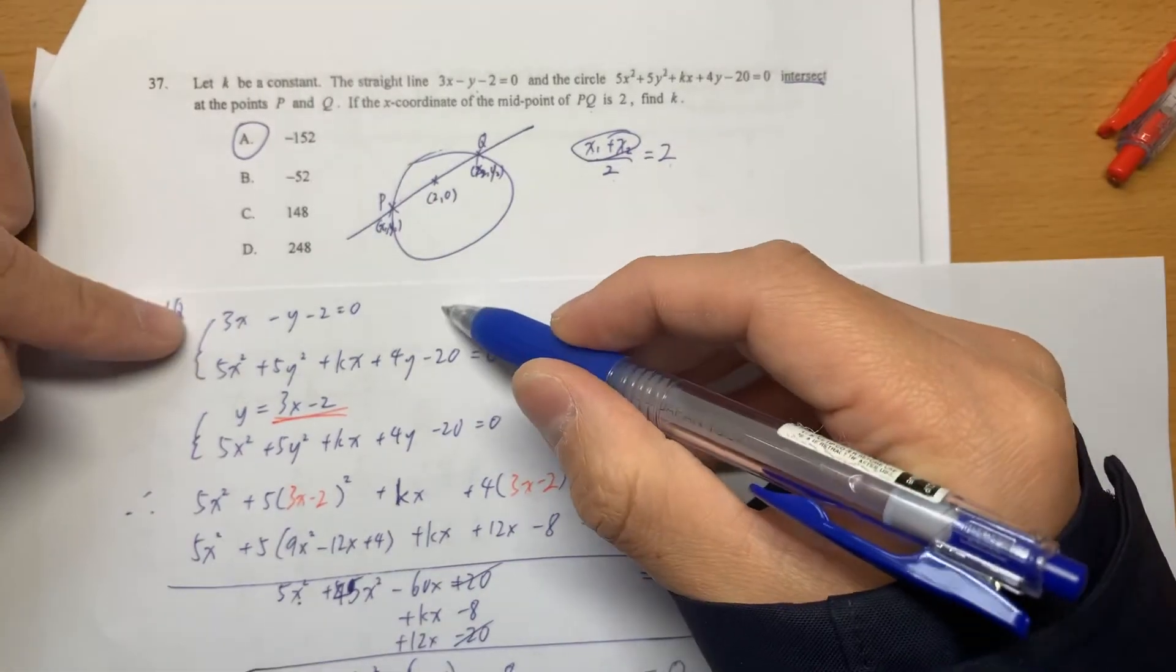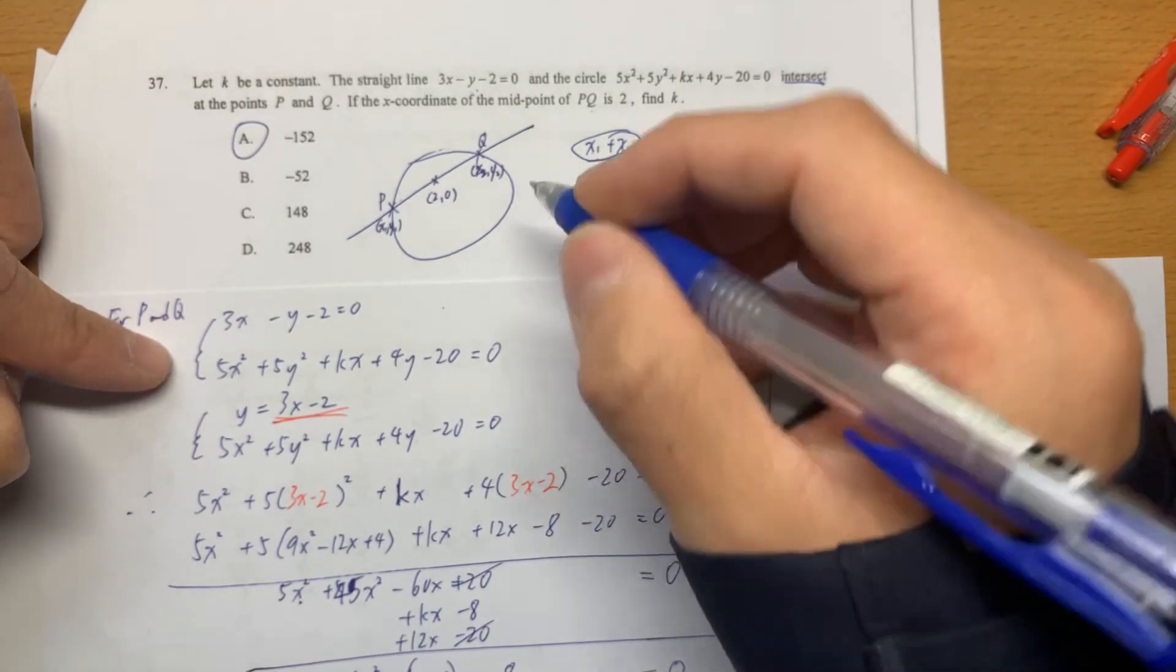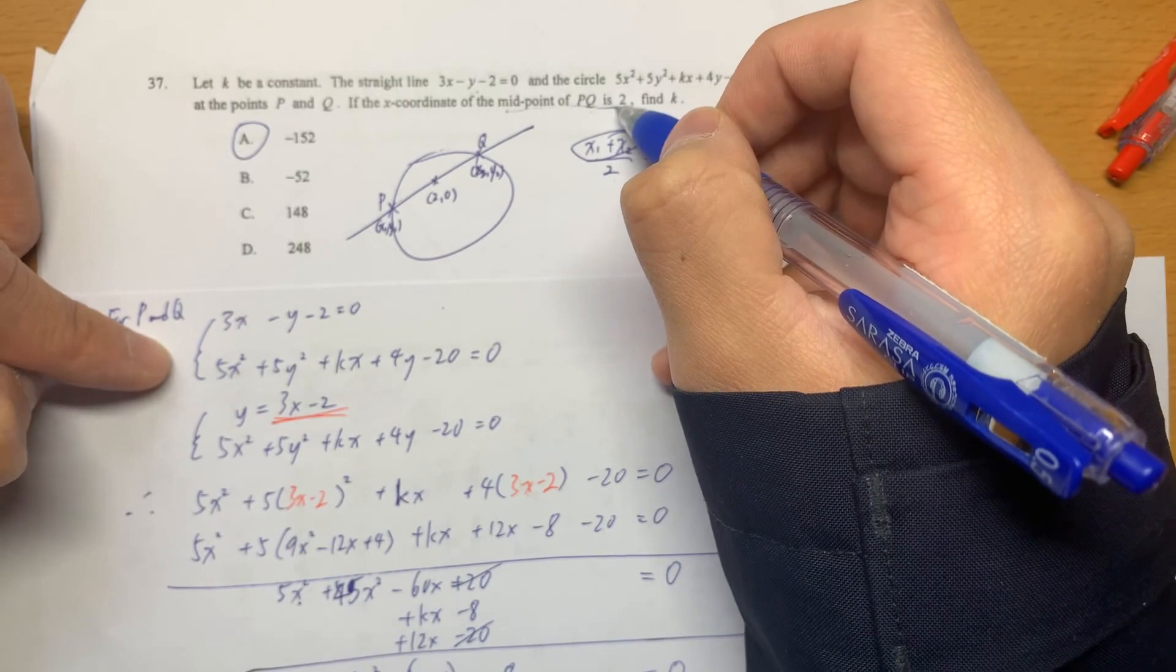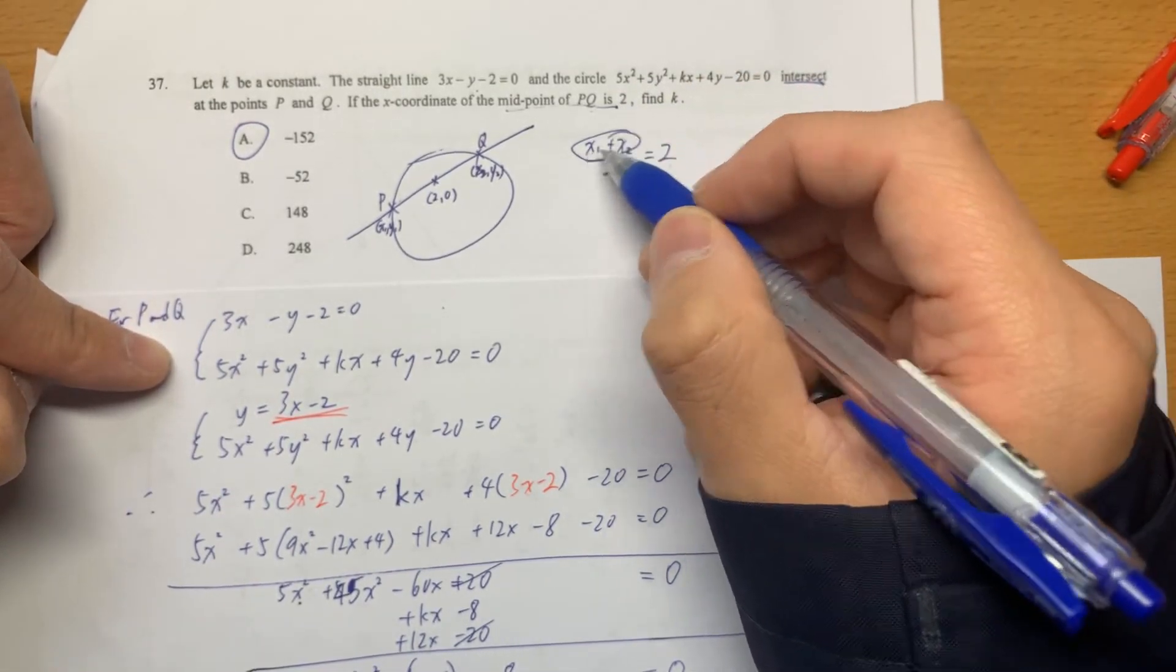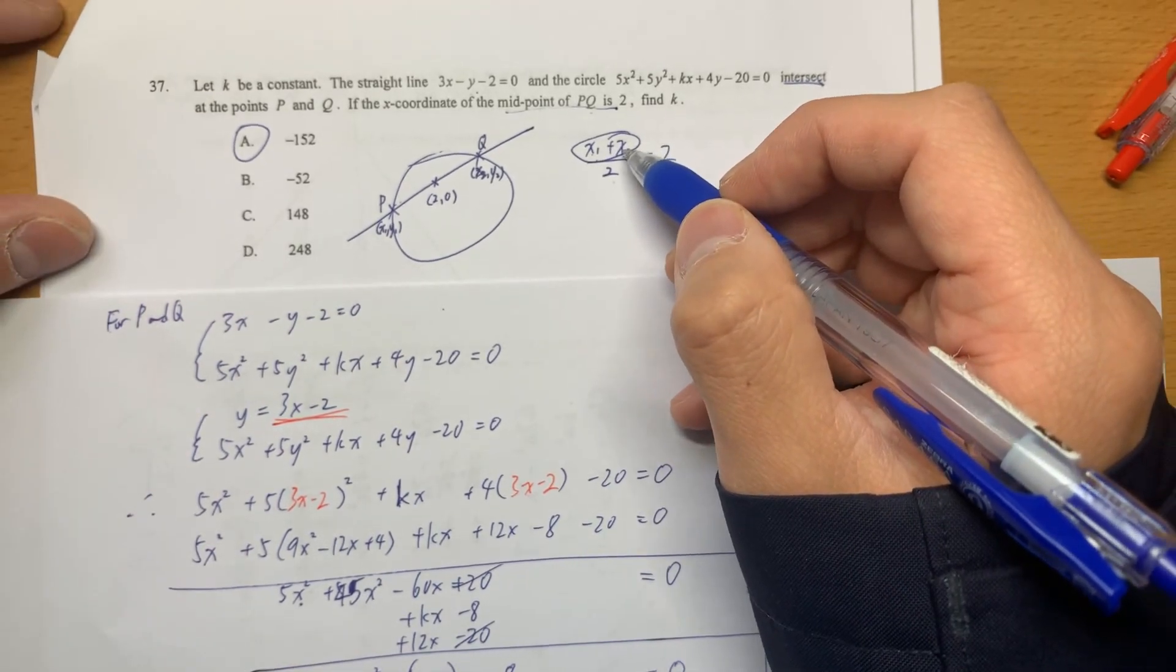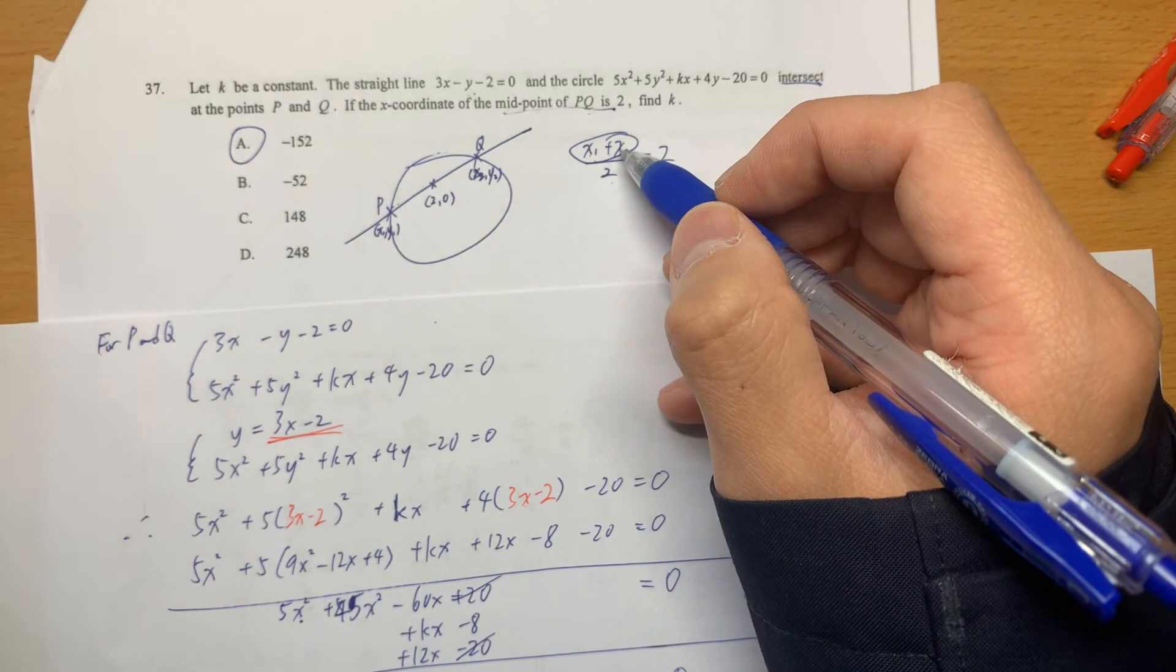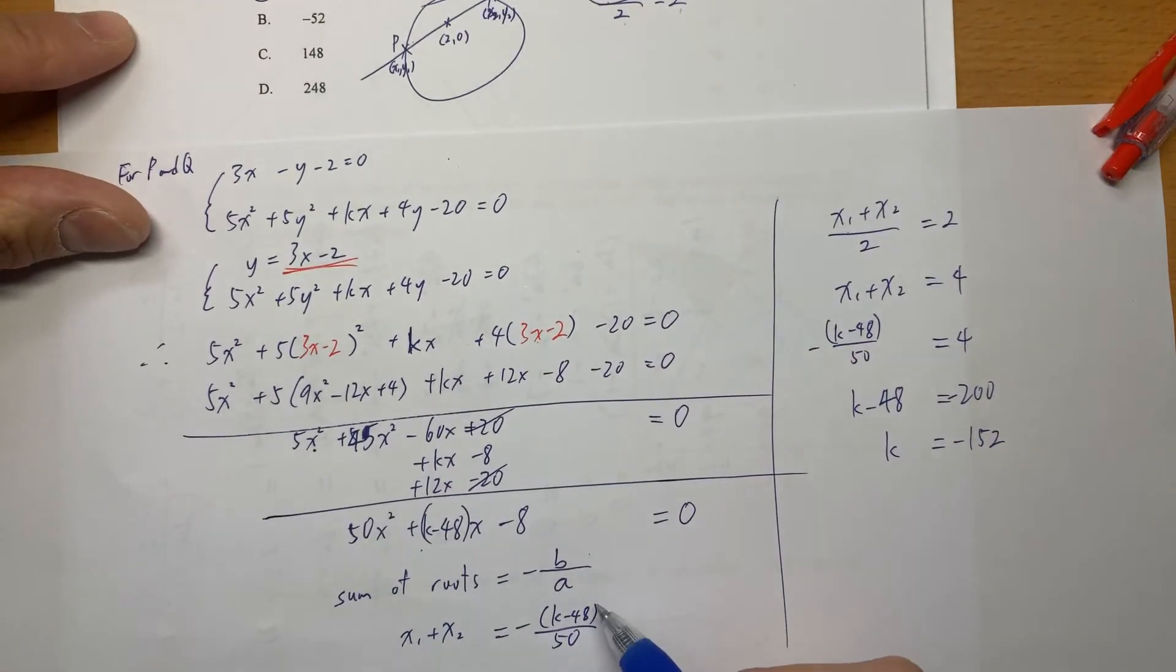We are talking about the results of simultaneous equations. And in this case, they are asking the midpoint of PQ. So what we are interested in is not x1 itself or x2 itself, but the sum of them, sum of roots. That's why we can apply what we have learned in form 4 to get the sum of roots directly from the coefficient, negative B over A.